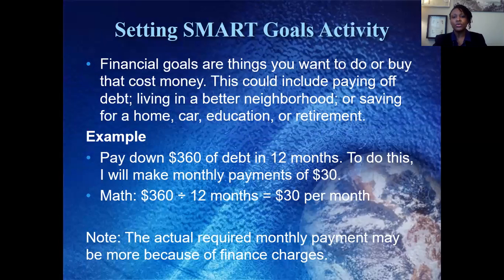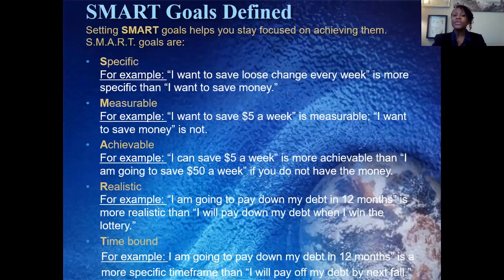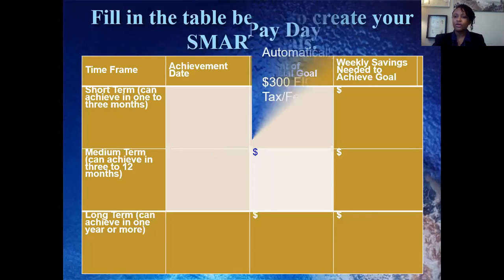We ask students to set SMART goals and think about how much they can save incrementally over time. One example shows saving $30 a month for 12 months and demonstrates how much that accumulates. We then define what SMART goals are, go to the SMART goals table, and ask students to select a short-term, medium-term, and long-range planning goal for their finances. Short-term is up to 3 months, medium-term is 3 to 12 months, and long-term is beyond that.